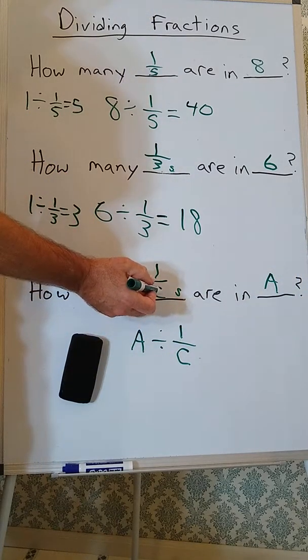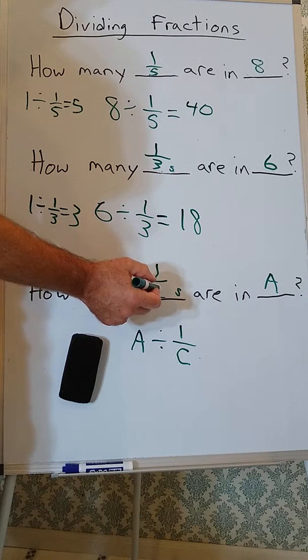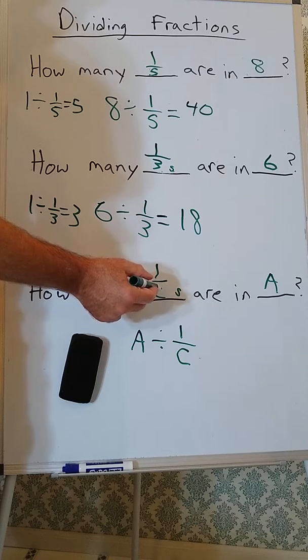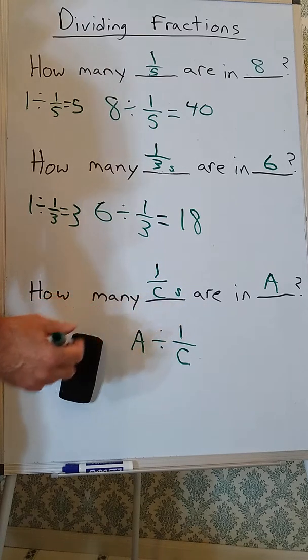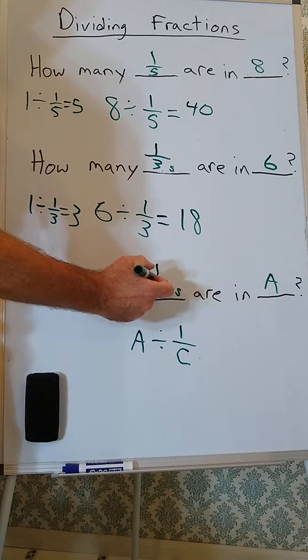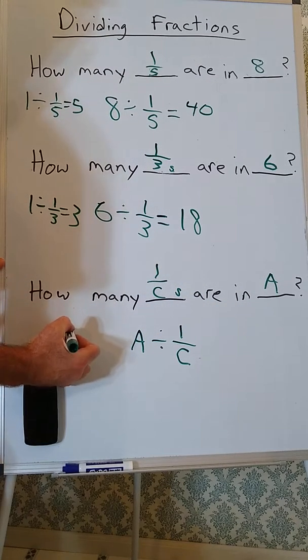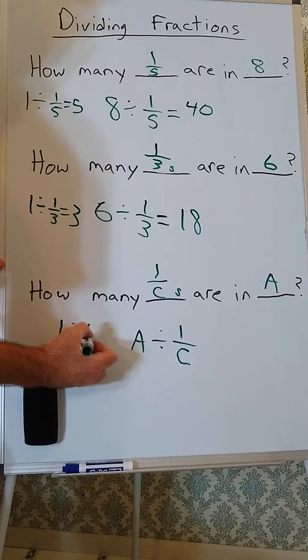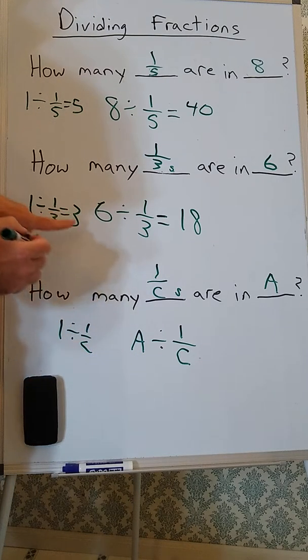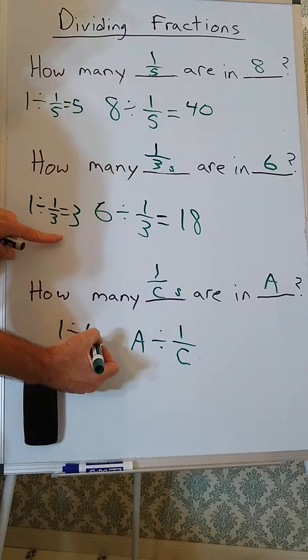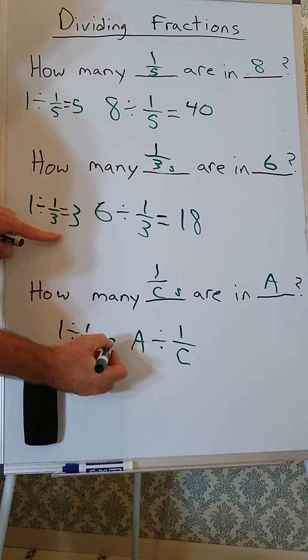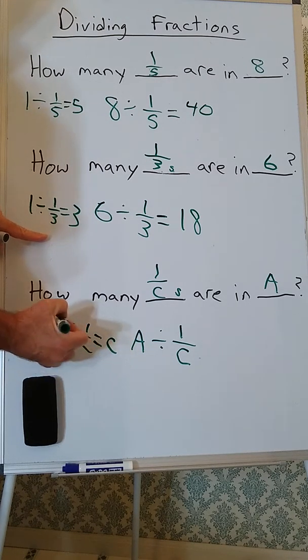Well, remember, c could be 2, so we're talking about halves, or it could be a 5, we're talking about fifths. Well, let's think about this. If we're doing 1 divided by 1 over c, well, we see that there are going to be c, 1 over c's in 1.